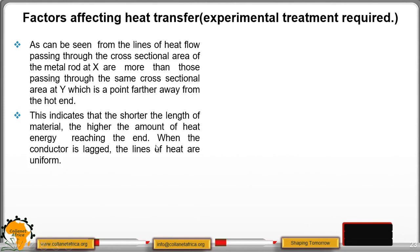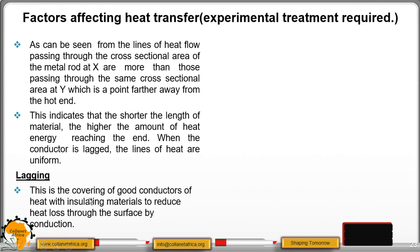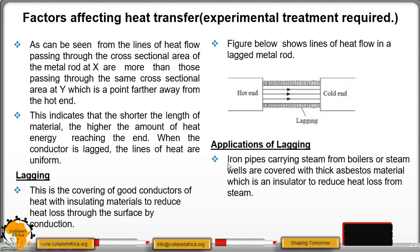When a conductor is covered with a material — that is, lagged — the lines of heat flow become uniform. Lagging means covering the conductor with insulating materials to reduce heat loss through conduction. When we lag a conductor, the lines of heat flow are straight, reducing heat loss. For example, iron pipes carrying steam from boilers or steam wells are always covered with asbestos, which is an insulator. This reduces heat loss to the atmosphere so the steam maintains its temperature.